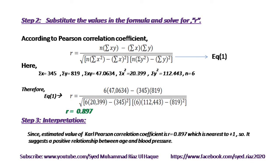After putting the values in the formula, we apply the Pearson correlation coefficient: r equals n·Σxy minus Σx·Σy, divided by the square root of [n·Σx² − (Σx)²] times [n·Σy² − (Σy)²]. Note that the two square brackets are multiplied together. The computed values are: Σx = 345, Σy = 819, Σxy = 47,634, Σy² = 112,443, and n = 6.